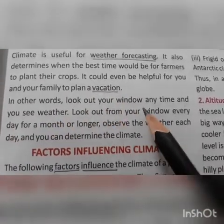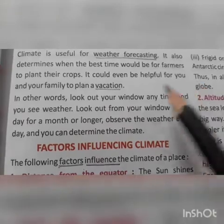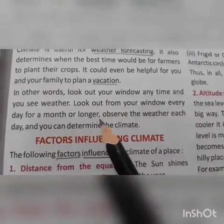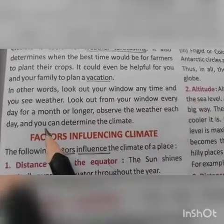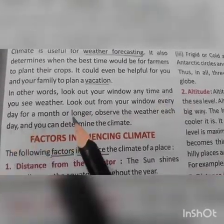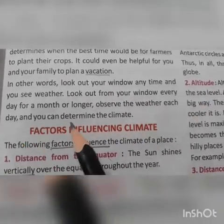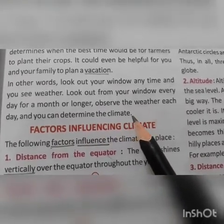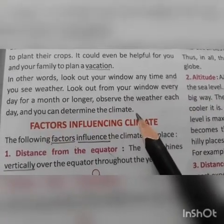In other words, look out your window anytime and you see weather. Look out from your window every day for a month or longer, observe the weather each day, and you can determine the climate. After observing for many months or years, you can also determine the climate.